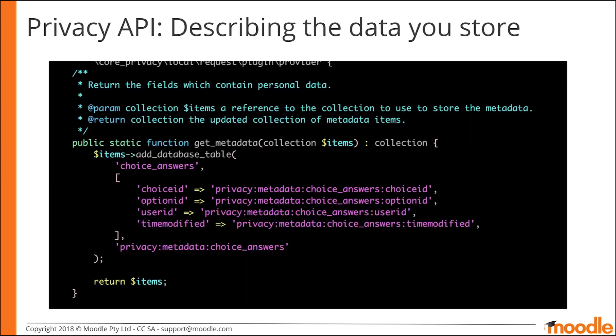For those plugins which do store data, you must describe what data you store. We ask that you declare and describe any database table which contains personal user data, any external system that you send such data to, any plugins which you send data to, and any other core subsystem that you send data to. We make use of language strings here so that these descriptions and the summaries of these tables can be translated.